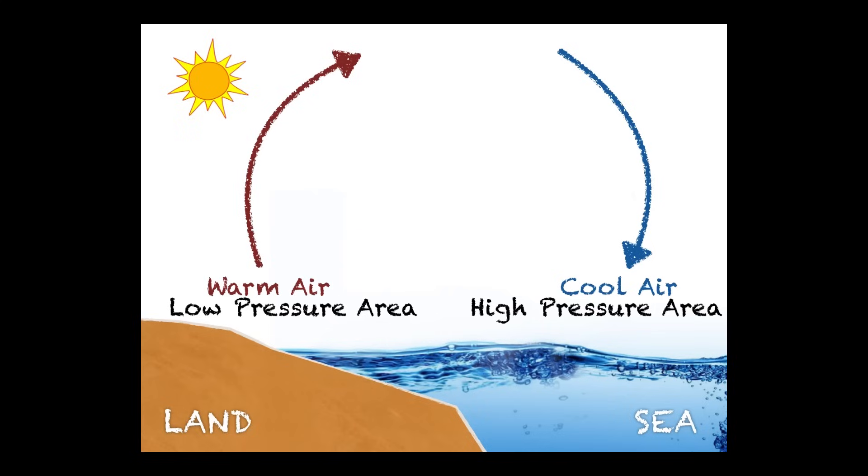So since we have a high pressure area over the sea, a low pressure area over the land, the rule is high pressure air always moves towards low pressure air. And now we have a movement wind moving from the sea over to the land.